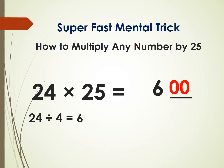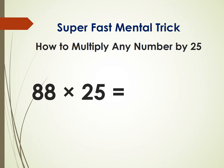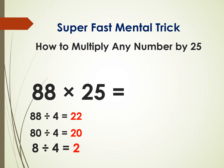Let's take a look at another example. I want to multiply 88 by 25. Just divide 88 by 4. The answer is 22. It's very simple — just divide 80 by 4, you get 20, and then 8 by 4, you get 2, so it is 22. Write 22 and then just put two zeros.